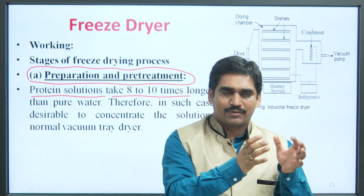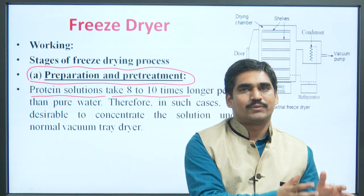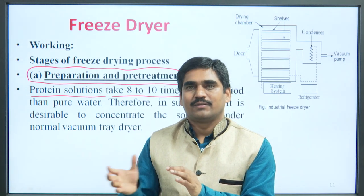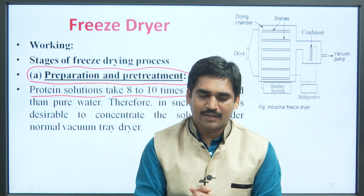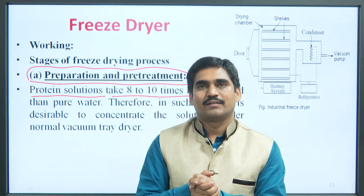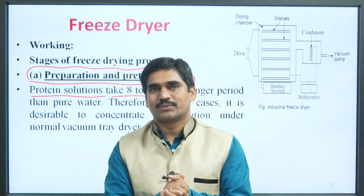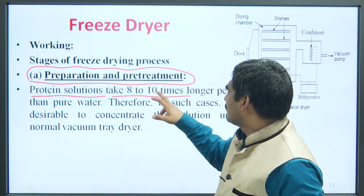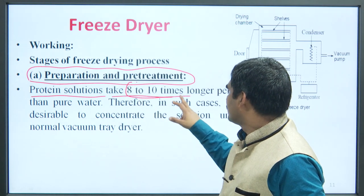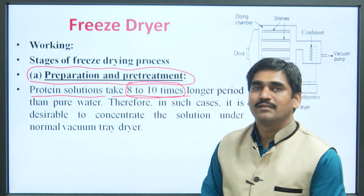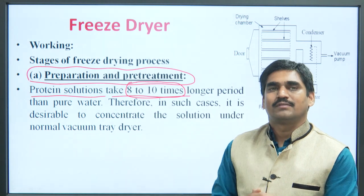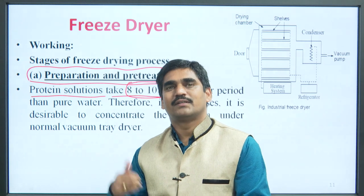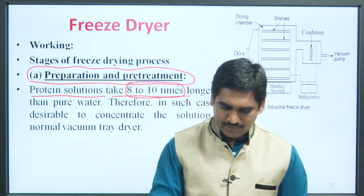First, the solutions or protein solutions are concentrated using a tray dryer or normal vacuum tray dryer. After concentrating, it is subjected to the freeze dryer — because normally it takes 8 to 10 times longer period than pure water, that is why it is first concentrated under a normal vacuum tray dryer before being subjected to freeze drying.